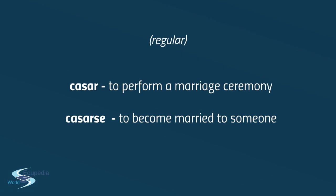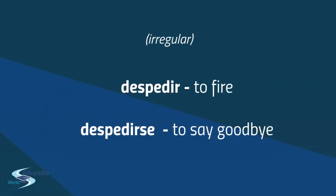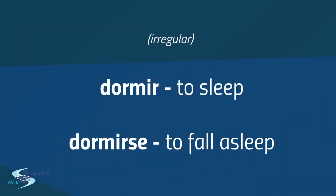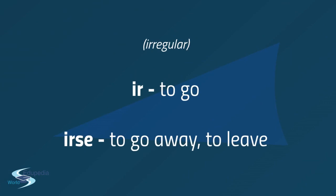Casar — a regular verb — means to perform a marriage ceremony, while casarse means to get married. Despedir means to fire, while despedirse means to say goodbye — quite different meanings. Dormir means to sleep, while dormirse means to fall asleep. Ir means to go, while irse means to go away or to leave.